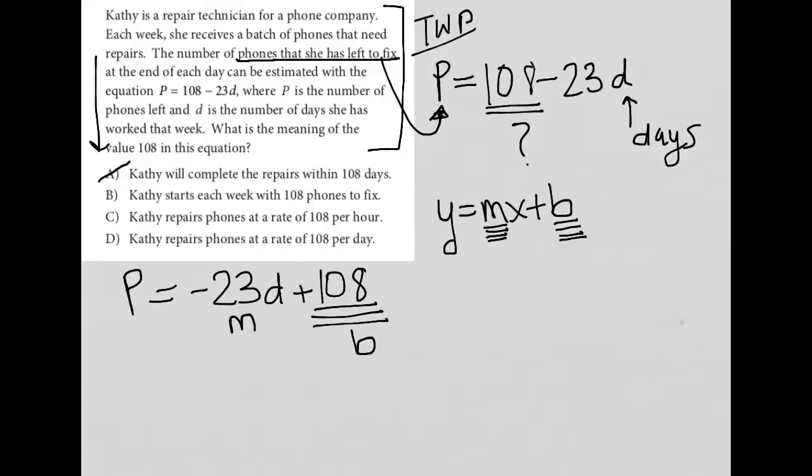Choice B, Kathy starts each week with 108 phones to fix. Now that makes more sense, right? Because if we're starting the week, that means there hasn't been any days worked, which means D would equal 0, and when D is equal to 0, P, the number of phones she has left to fix, is equal to 108. So that would make sense to go along with, at the beginning of the week, or at the start of each week, she has 108 phones to fix, and therefore choice B is the correct answer.